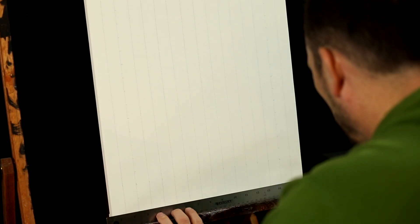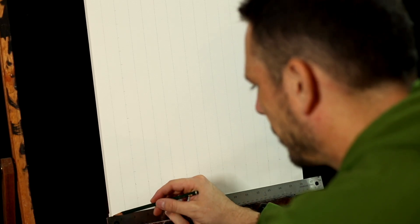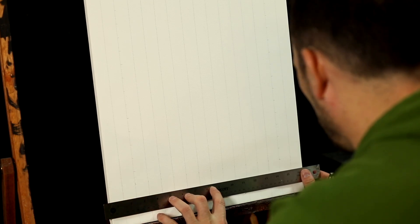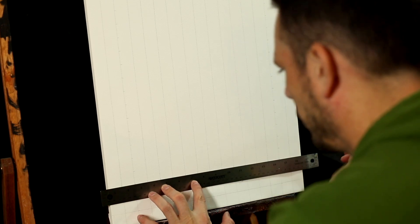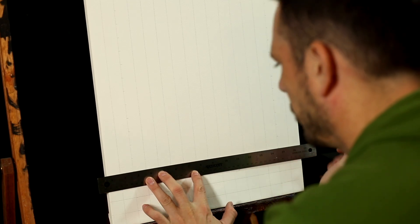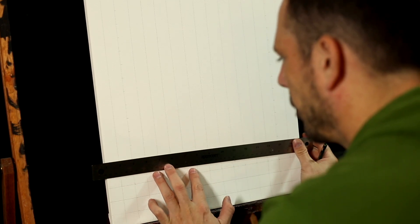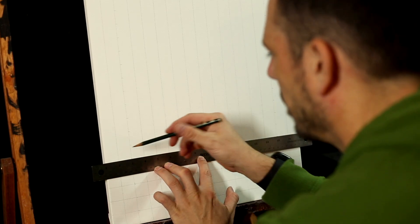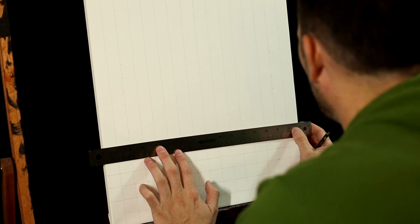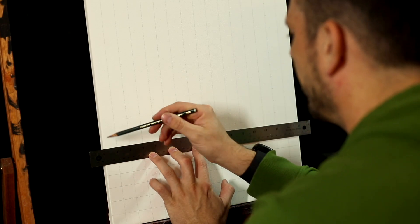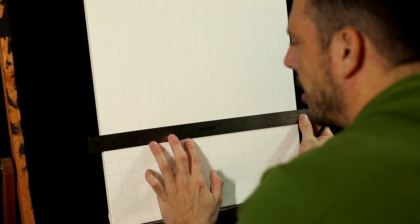I'll go back to my smaller ruler so it's easier to hold. Starting at the bottom, I'm going to line up my two marks and draw a line across. Lining up the two marks, making sure they're right on line. I'll go all the way up to the top, jumping ahead to the last one since you don't need to see every single line — I don't want you to get too bored.